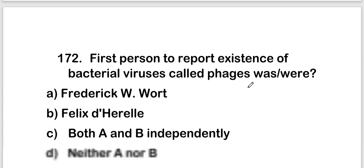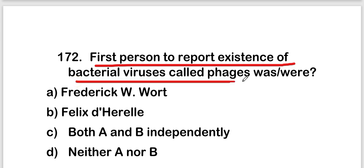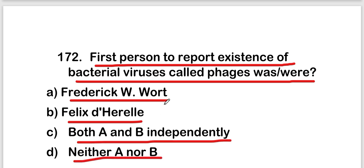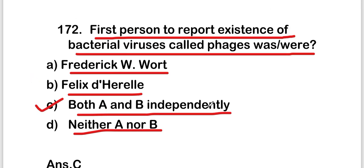Next question: the first persons to report the existence of bacterial viruses called phages were — Frederick Twort, Felix d'Herelle, both A and B independently, or neither A nor B. The right answer is option C — both Frederick Twort and Felix d'Herelle independently reported the existence of bacterial viruses called phages.